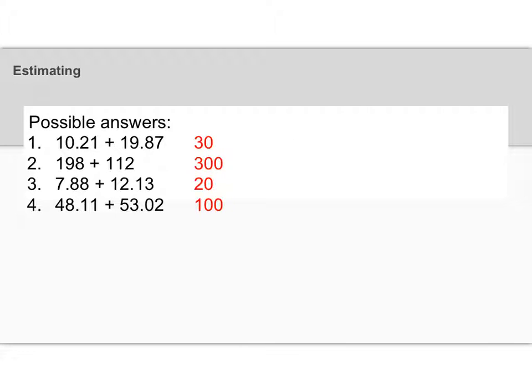So you can see what I did in that first one. 10.21 is kind of close to 10. 19.87 is kind of close to 20, so I got 30 for that one. 198 is close to 200. 112 is a little closer to 100, so I added them to get 300. For number 3, 7.88 is close to 8. 12.13 is kind of close to 12, so I added them to get 20. And then for the last one, 48.11 is kind of close to 50, and 53 is kind of close to 50, so I estimated that to be around 100.